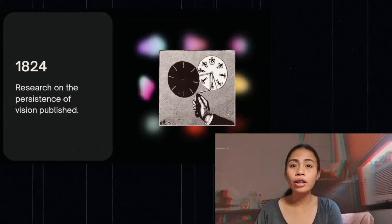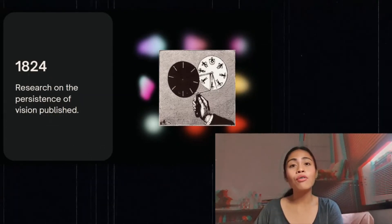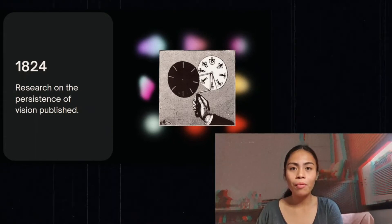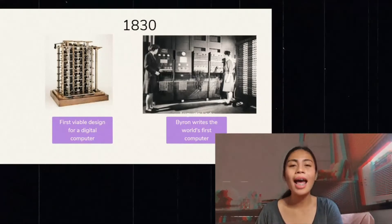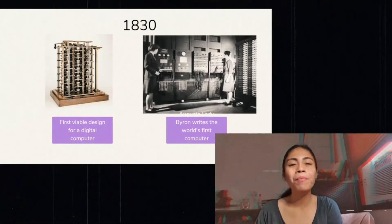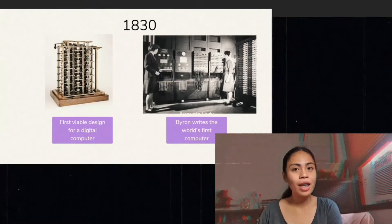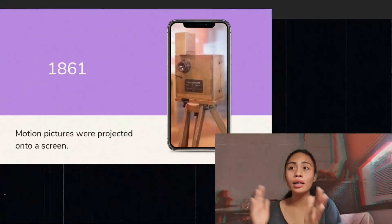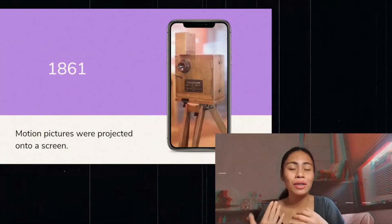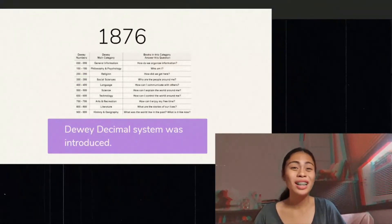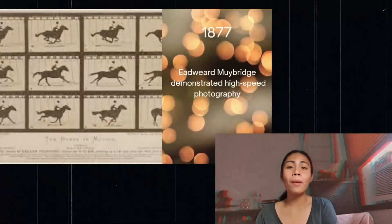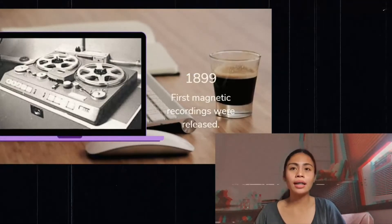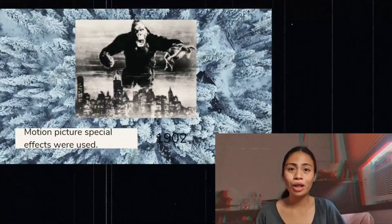In 1824, research on the Persistence of Vision was published — also known as Optical Illusions. In 1830, the first viable design for a digital computer was invented, and Augusta Ada Byron wrote the world's first computer program. In 1837, the Telegraph was invented in Great Britain and the United States. In 1861, motion pictures were projected onto a screen. In 1876, the Dewey Decimal System was introduced, and Edward Muybridge demonstrated high-speed photography. In 1899, the first magnetic recordings were released, and in 1902, motion picture special effects were used.